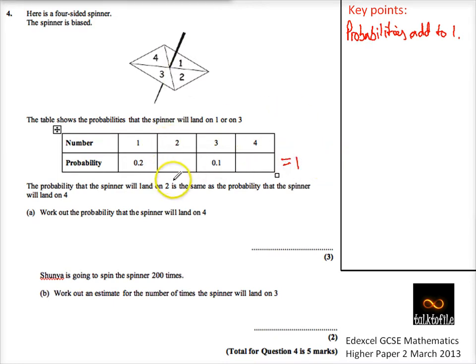The probability the spinner will land on two is the same as it will land on four. So what we know is what we've got already. The probability of two plus the probability of getting a four has got to add up to... well, this adds up to 0.3, so it's going to add up to 0.7. So these two together will add up to 0.7.